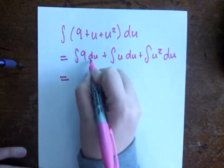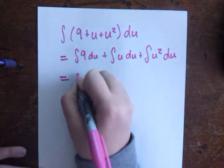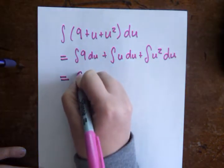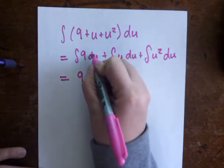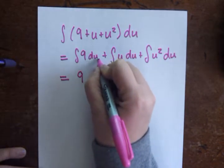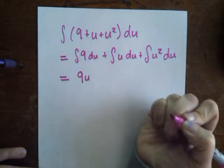Okay, so the integral of 9 du. 9 is a constant, so I know that the integral is just going to be 9 times whatever variable we're working with. And in this case, the variable we're working with is a u. So I get 9u.